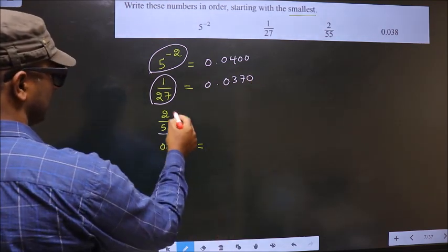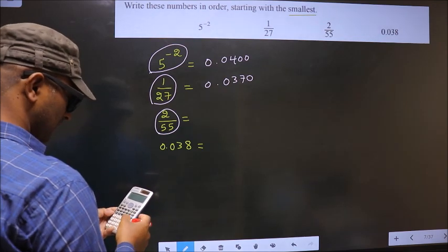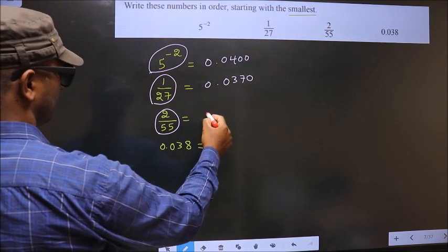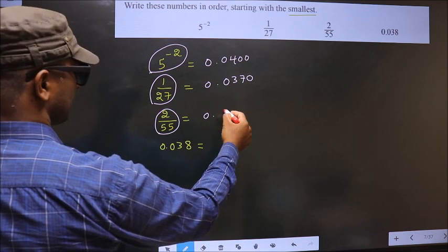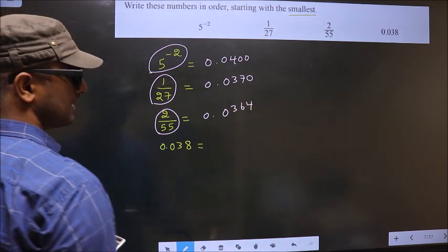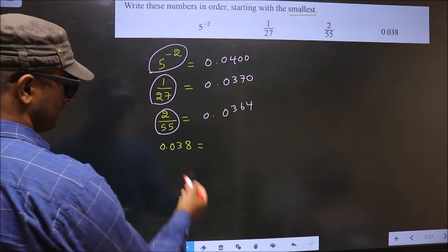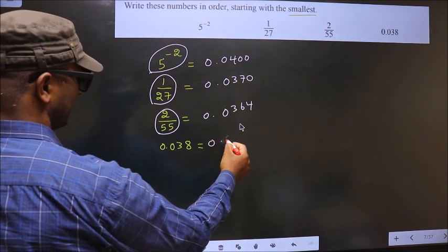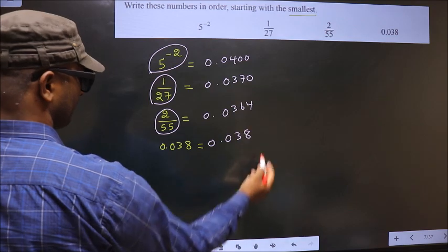Now you put this in the calculator, you get 0.0364. I rounded up to 3 significant figures. Now this will remain like that only.